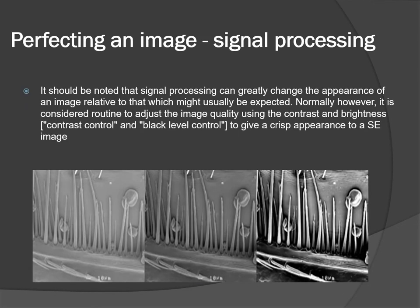How can we perfect an image? By signal processing. It should be noted that signal processing can greatly change the appearance of an image. Normally, it is considered routine to adjust image quality using contrast, brightness control, and black level control to give a crisp appearance to a secondary image.